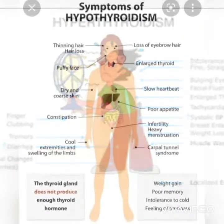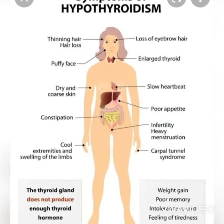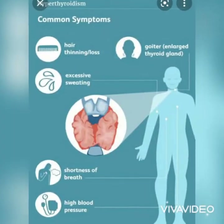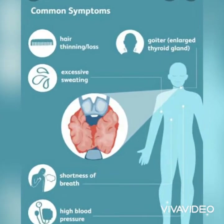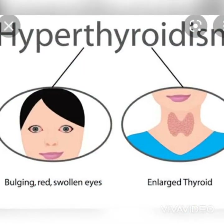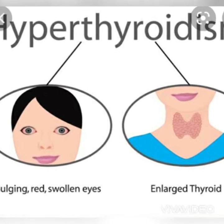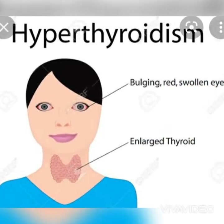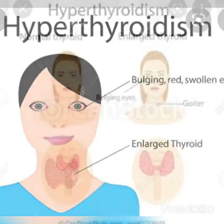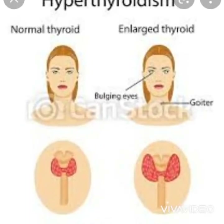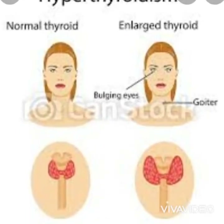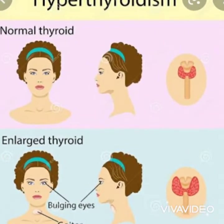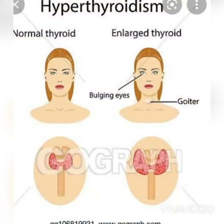Hyperthyroidism means a lot of hormones are excreted, affecting your metabolism, which causes unintentional weight loss and rapid and irregular heart beat. There are many treatments available. For hyperthyroidism, we use anti-thyroid medication and radioactive iodine, which slows the production of thyroid hormones.